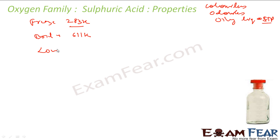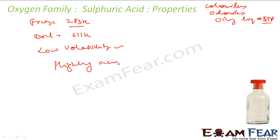You have to dissolve concentrated sulfuric acid in water very slowly and do constant stirring. It has very low volatility — it is not volatile. It is highly acidic, considered one of the strongest acids. It has a strong affinity for water.